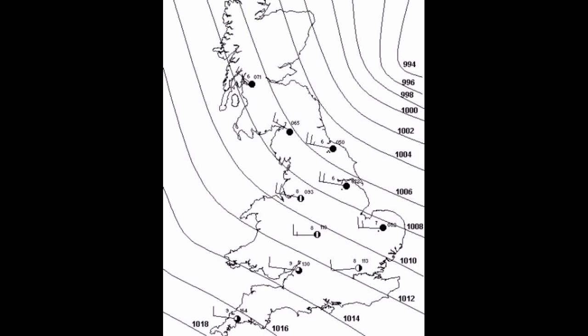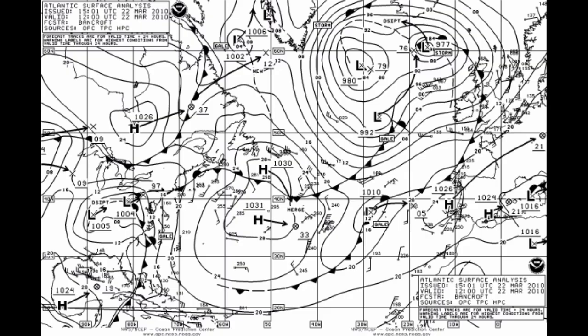The first step is to draw in the isobars — lines along which the pressure is the same. They are of the same nature as height contours on a geographical map. Usually they are drawn at intervals of 2 or 4 millibars. By definition, isobars can never cross each other.